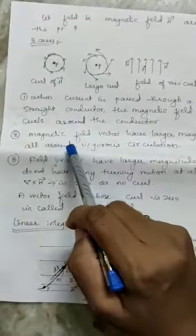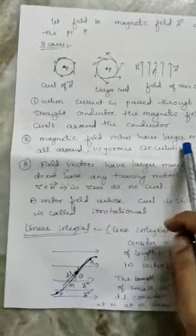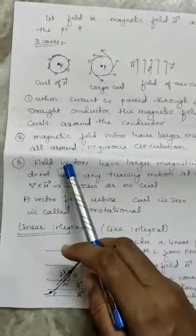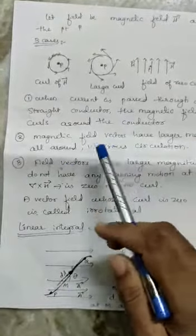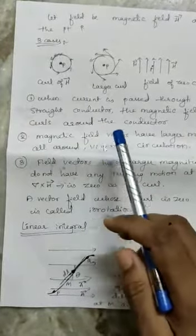Like this it is represented. Second case: the magnetic field vectors have larger magnitude all around, circulated all around here.